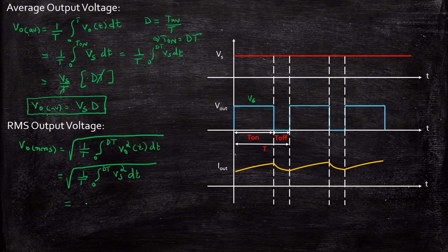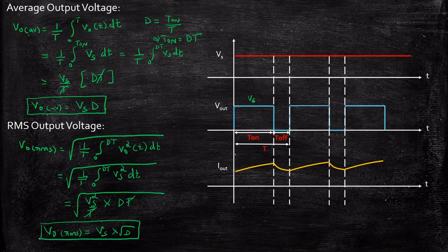Now, this is nothing but Vs square by T. You can keep it under roots into DT. T and T will be cancelled and you will be left out with taking Vs square outside. You will be getting Vout RMS is equal to Vs times root D. Very important expression. There will be problems related to this and you need to know what's the average and RMS output voltage to solve those numericals.